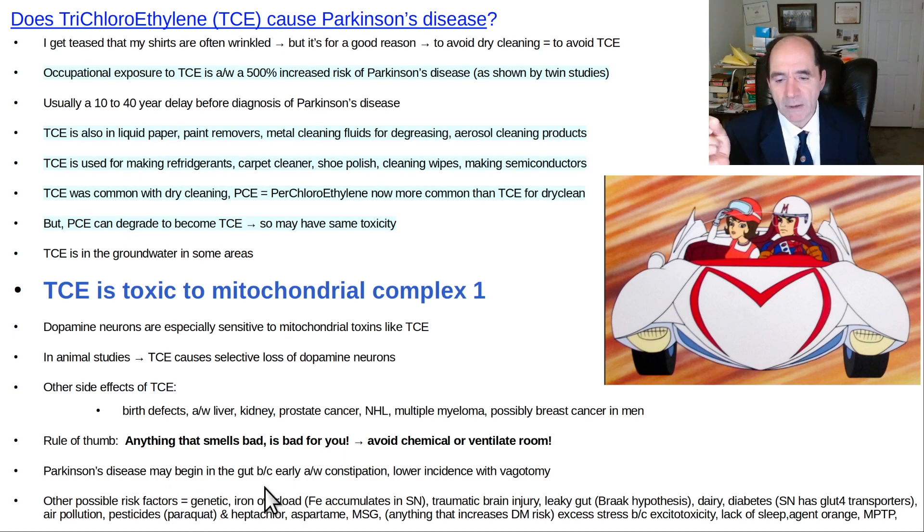Parkinson's disease can be thought to maybe begin in the gut in some patients. There's multiple different causes of it. But the end step is you end up destroying the substantia nigra in the midbrain, the dopamine-producing neurons. Here's a whole bunch of other things that are potentially associated with Parkinson's. What I find most interesting is this idea of diabetes. There's increased incidence of Parkinson's disease in diabetics because the substantia nigra has glucose type 4 transporters. Those are the ones that are vulnerable to insulin resistance. Diabetes makes people stupid and it can also increase the risk of Parkinson's disease.